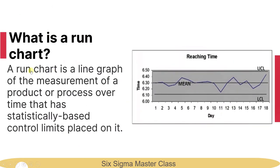What is a run chart? A run chart is a line graph of the measurement of the product or process over time that has statistically-based control limits placed on it.